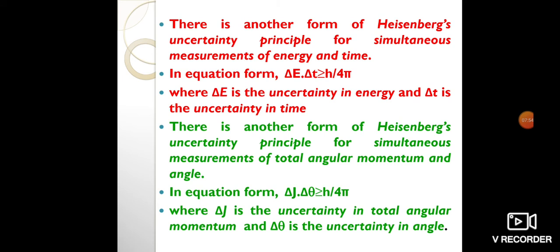Ordinary experience provides no clue of this principle. It is easy to measure both the position and velocity of, say, an automobile because the uncertainties implied by this principle for ordinary objects are too small to be observed. The complete rule stipulates that the product of the uncertainties in position and velocity is equal to or greater than a tiny physical quantity or constant h/4π.